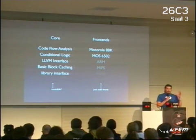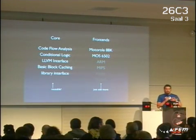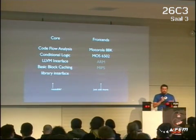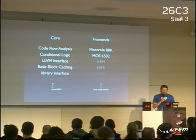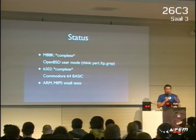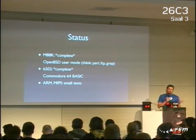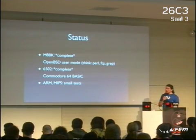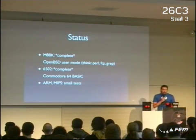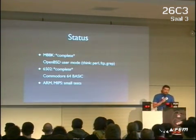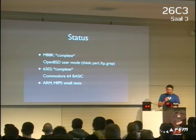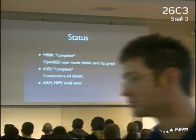The core has lots of reusable code that every emulator needs, and what someone else has to do is just write more front-ends. We have two front-ends right now that are working pretty well. What is working right now is Motorola 88K — a not very well-known architecture — and we can run pretty much anything from OpenBSD's user mode on top of LibCPU. We also have a complete 6502 front-end and can run Commodore 64 BASIC.